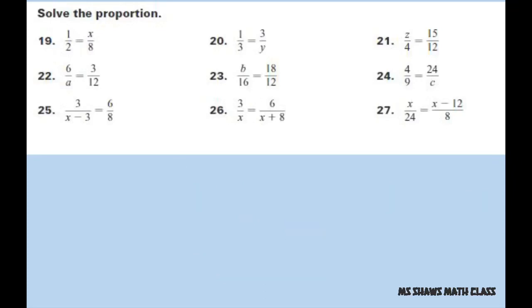For the next one, we have b divided by 16 equals 18 divided by 12. Cross multiply, you get 12b equals 16 times 18. Divide both sides by 12, you get b equals 16 times 18 divided by 12.